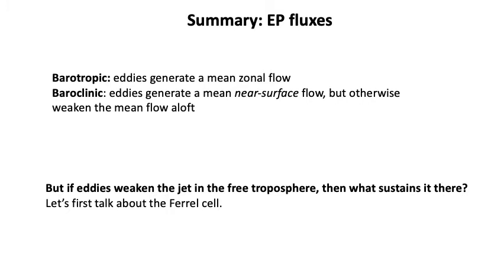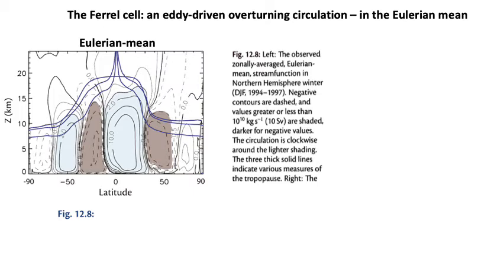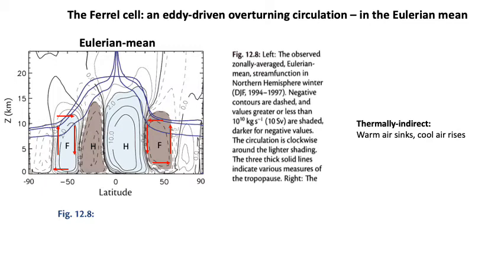The Ferrel cell — one of these things you've probably heard about but haven't learned much about because it really requires a lot of complicated theory to get to. The Ferrel cell is a thermally indirect, eddy-driven, Eulerian mean meridional overturning circulation in the middle latitudes. Shown here is the Eulerian mean stream function at all latitudes and heights — you can see the Hadley cells marked H, and now I'm highlighting the Ferrel cells with F. The arrows denote the nature of the overturning circulation, which is thermally indirect: sinking motion closer to the equator where air is warmer and rising air at higher latitudes.